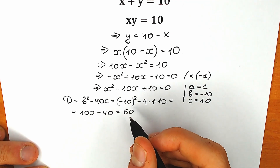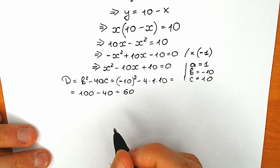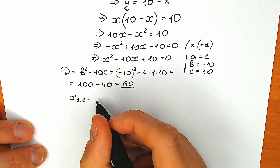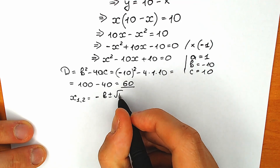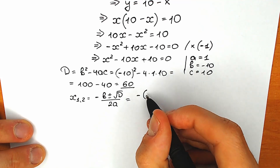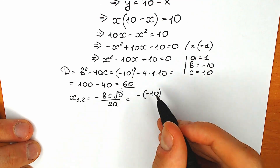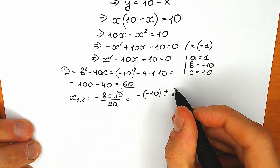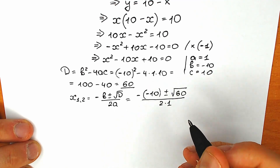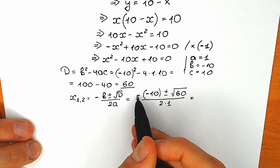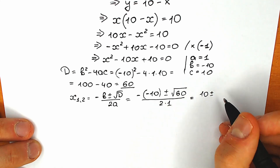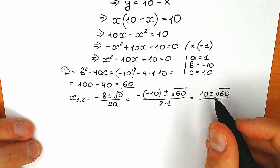We have a positive discriminant of 60, so we have real roots. Now let's plug this into the quadratic formula: x₁,₂ equals negative b plus or minus square root of discriminant, all over 2a. Plugging in: minus b equals minus of minus 10, so we have 10, plus or minus square root of 60, divided by 2 times 1, divided by 2.